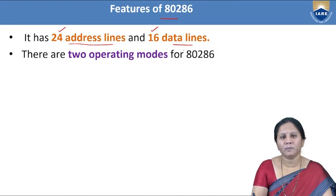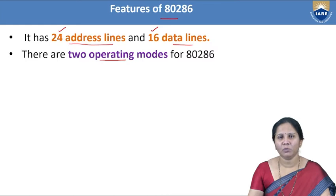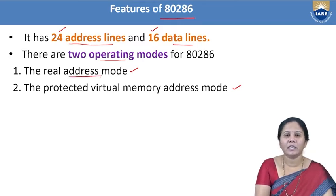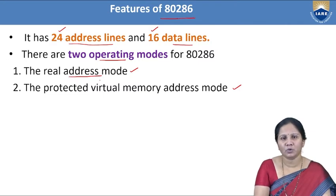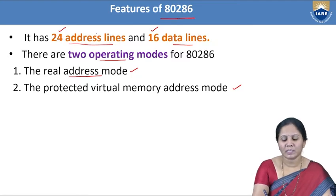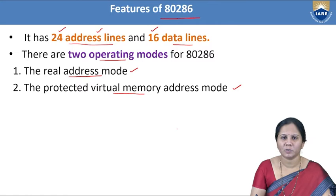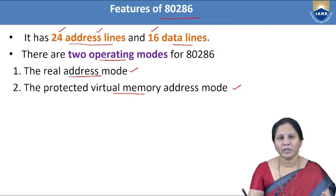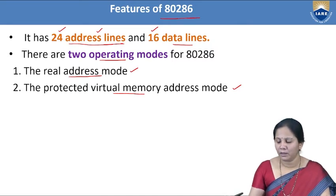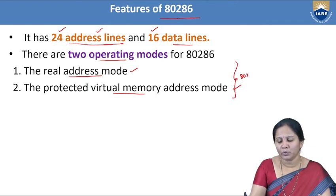The 80286 microprocessor can operate in two modes: real address mode and protected virtual memory address mode. In real address mode, the operation is similar to the 8086 — it generates only a 20-bit physical address even though the address bus is 24-bit wide. In protected virtual memory address mode, it generates a full 24-bit physical address, using all available address lines.